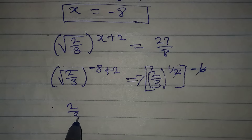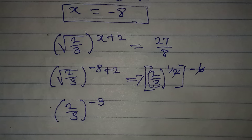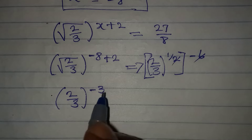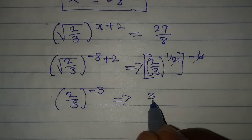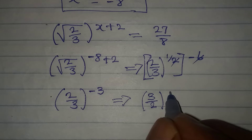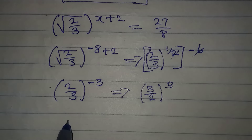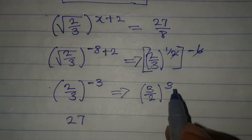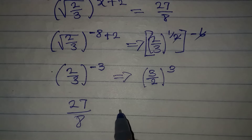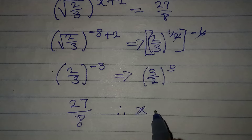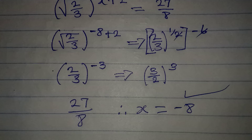So we have 2 over 3 to the power of negative 3. Removing the negative by flipping gives 3 over 2 to the power of 3. Then 3 to the power of 3 is 27 and 2 to the power of 3 is 8, confirming that x equals negative 8 is correct. Thank you for watching.